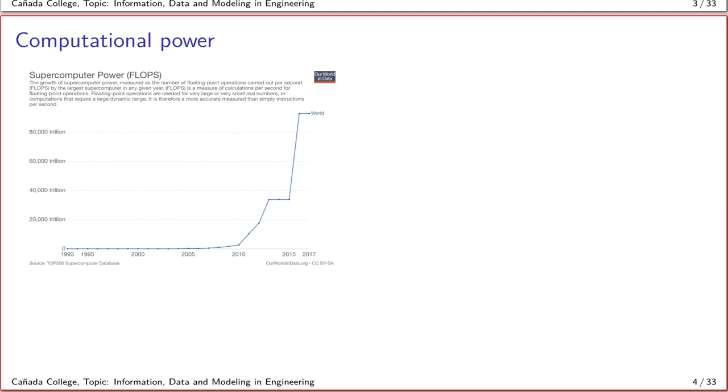A typical way in which the power of a supercomputer is measured is known as FLOPS, which measures how many floating point operations the computer can do per second. On the x-axis here is time in years and on the y-axis is the FLOPS that a supercomputer can achieve.